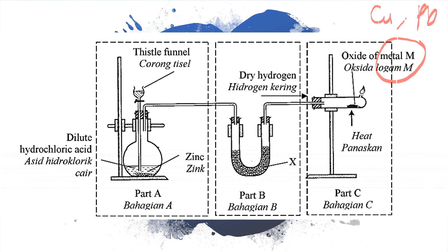In method two, you use the oxide of the metal, not the metal itself. This experiment can be divided into three parts: Part A, Part B, and Part C. Part A is where you produce hydrogen gas — the reaction that produces hydrogen gas.